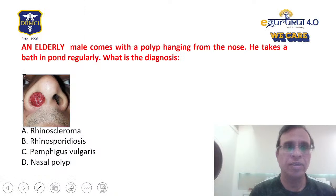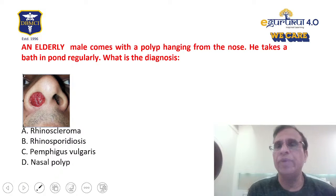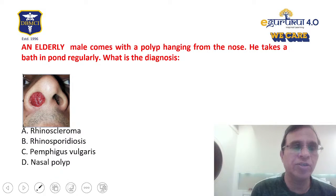Let's go to the next question. A male comes with a polyp hanging from the nose, he takes a bath in the ponds regularly. What is the diagnosis? There's an image showing a deep red mass occupying the entire nasal cavity on one side. The choices are rhinoscleroma, rhinosporidiosis, fungus, and nasal polyps.